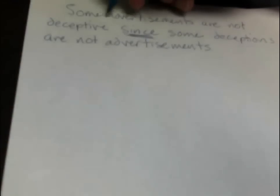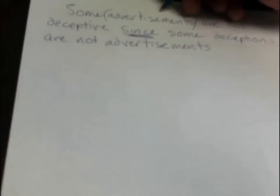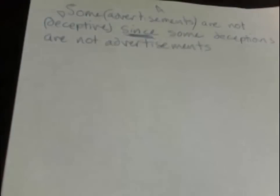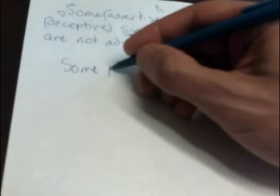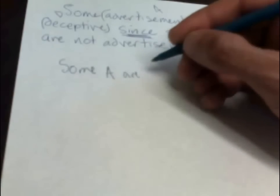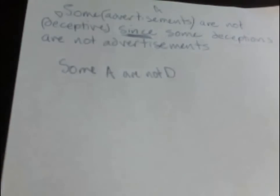We can use just two letters to symbolize that. We need a circle for advertisements and a circle for deceptive things. Some A are not D. That's the conclusion.